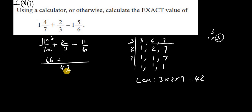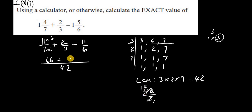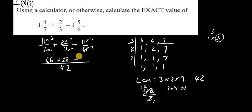We have plus, since 3 goes into 42 fourteen times, 14 times 2 gives us 28. And 6 goes into 42 seven times, and 7 times 11 is 77. So the expression becomes 66 plus 28 minus 77 over 42. That's a different approach: 7 into 42 goes 6 times, 6 times 11 is 66; 3 into 42 goes 14 times, 14 times 2 is 28; 6 into 42 goes 7 times, 7 times 11 is 77.